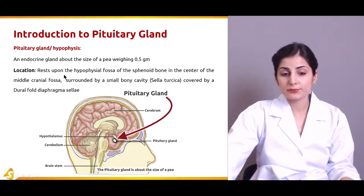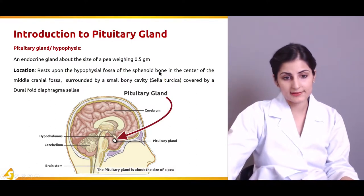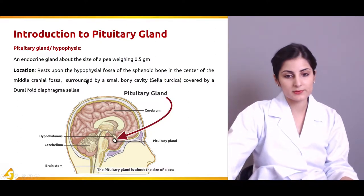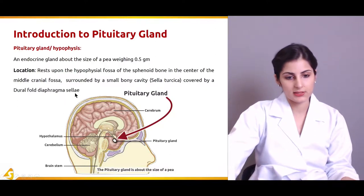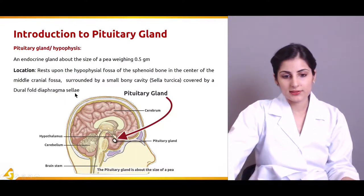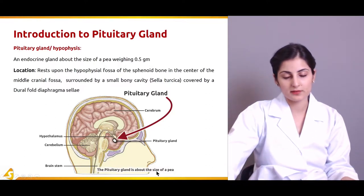The pituitary gland rests upon the hypophysial fossa of the sphenoid bone in the center of the middle cranial fossa, which is surrounded by a small bony cavity and covered by a dural fold — the diaphragma sellae. This is the hypothalamus, and this is the pituitary gland, which is just the size of a pea — very small in size.